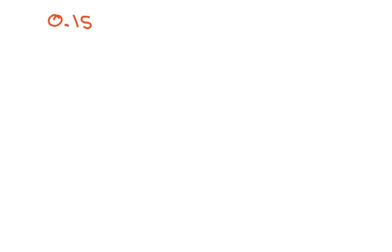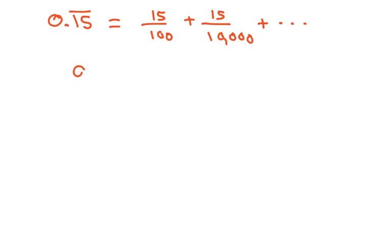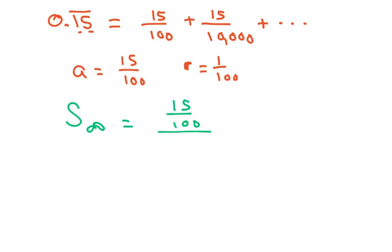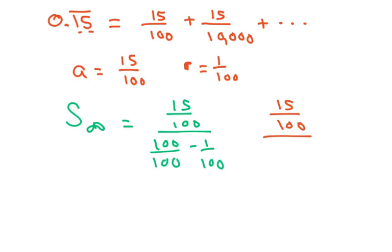The next one is 0.1̄5̄, repeating. This is going to be 15 over 100, plus 15 over 10,000, plus dot dot dot. My A is 15 over 100 and my R is 1 over 100, because we keep adding two zeros. Using the formula: 15 over 100 divided by 1 minus 1 over 100, which gives 15 over 100 divided by 99 over 100. These cancel, so my answer is 15 over 99.